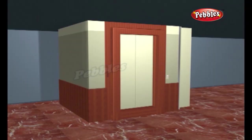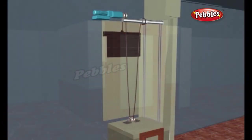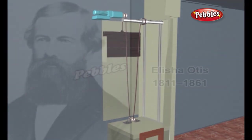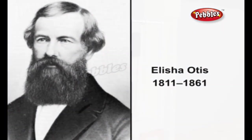An elevator or lift is a vertical transport vehicle that efficiently moves people or goods between floors of a building. They are generally powered by electric motors that either drive traction cables and counterweight systems or pump hydraulic fluid to raise a cylindrical piston.